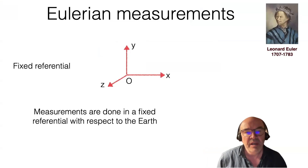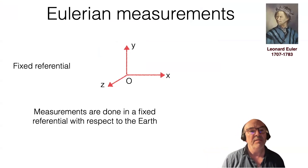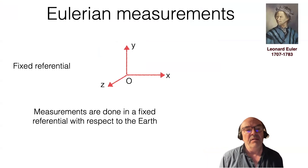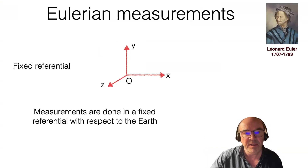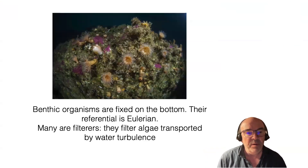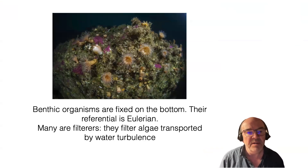One measurement system is the Eulerian one, which is the classical one where we have a fixed referential and measurements are done in this referential with respect to the Earth. The name comes from Leonard Euler, a mathematician. For example, benthic organisms that are fixed on the bottom belong to the Eulerian referential — they see the world in a fixed referential.